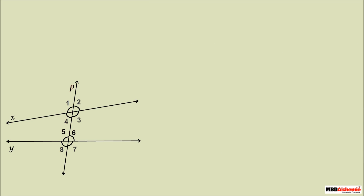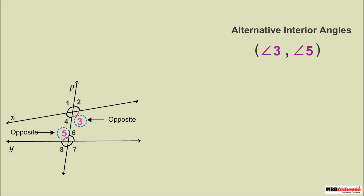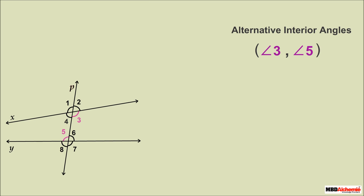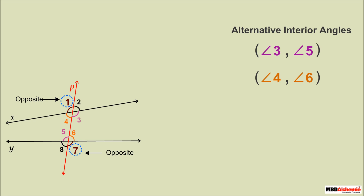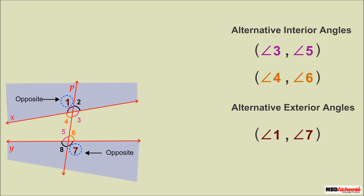Angles 3 and 5 are called alternate interior angles — they lie on opposite sides of the transversal and in the interior part of lines x and y. Another pair of alternate interior angles is 4 and 6. Angles 1 and 7 lie on opposite sides of the transversal but in the exterior part of lines x and y, so they are called alternate exterior angles.